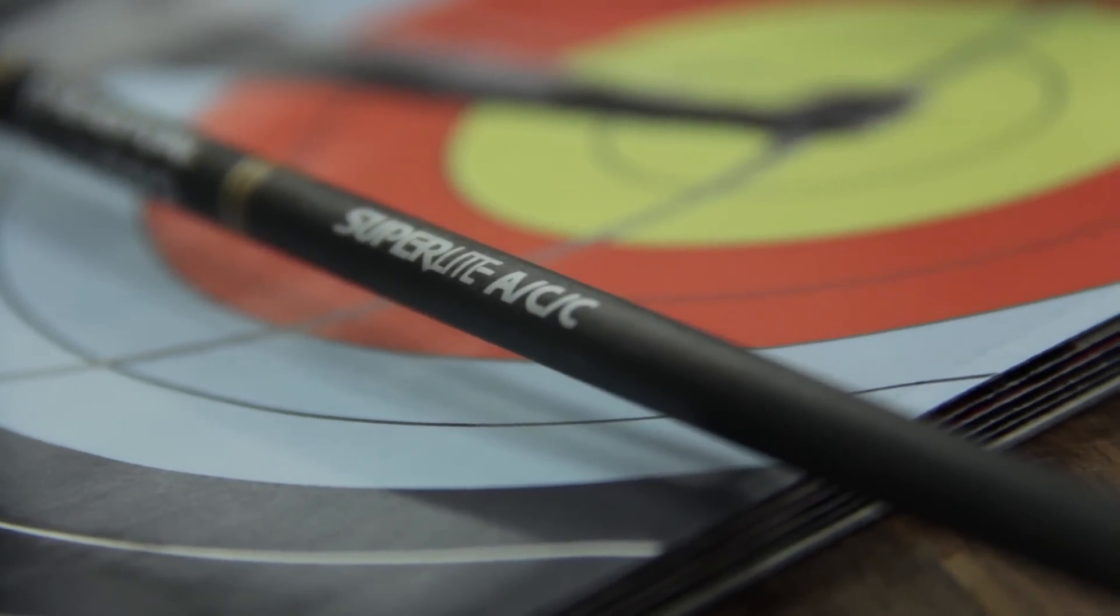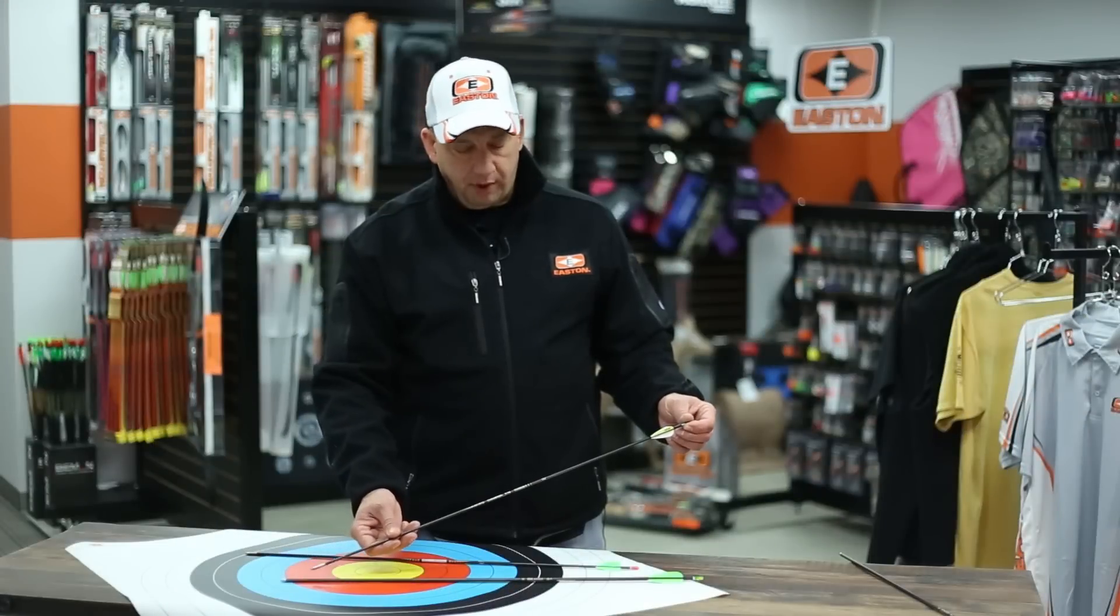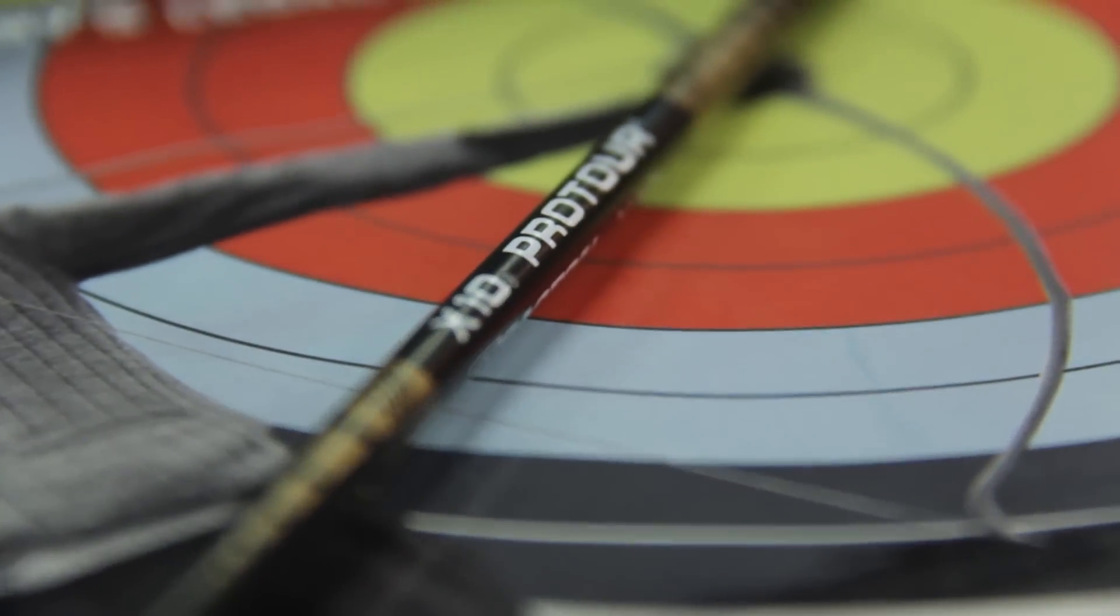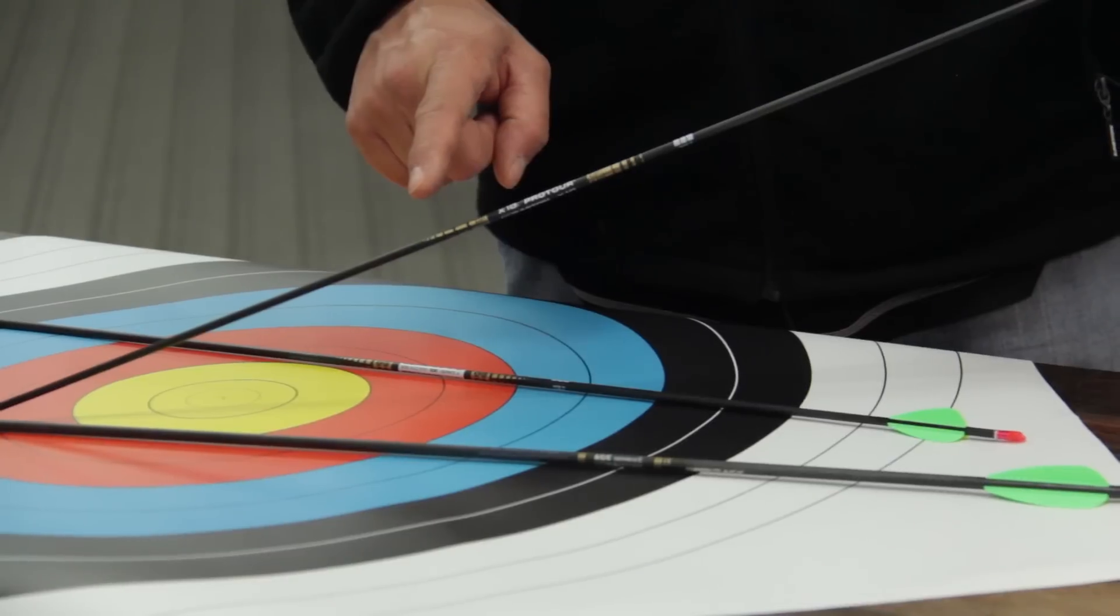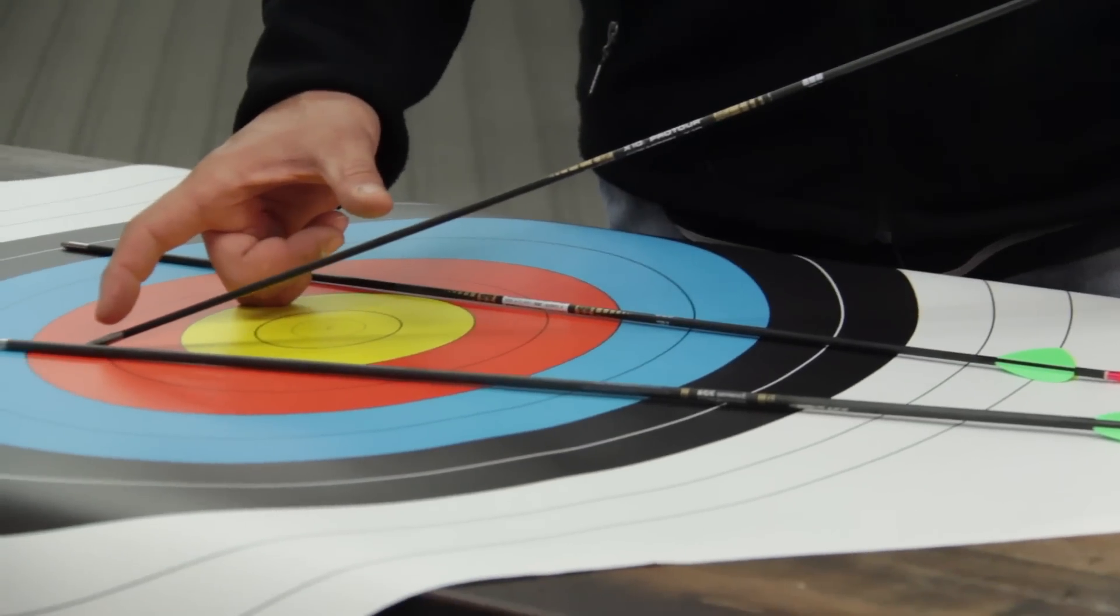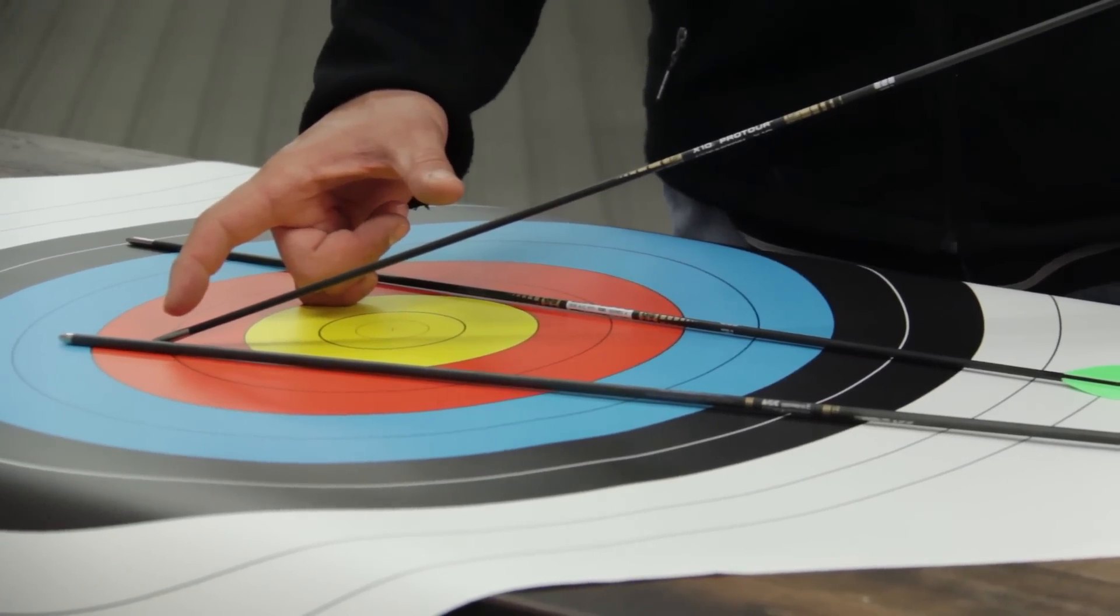Top compound shooters around the world rely on the tapered performance of the X10 Pro Tour. The arrow is substantially parallel in the rear for extra stiffness on compound launch and it tapers down to a slim point section. This improves aerodynamics.